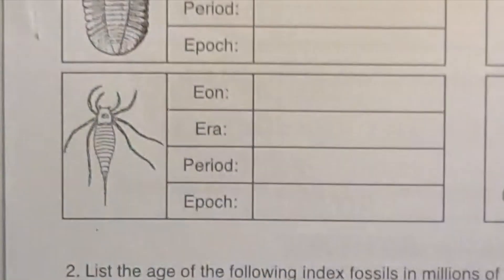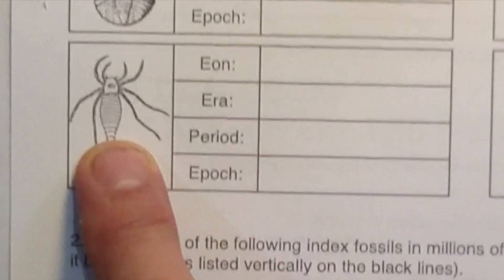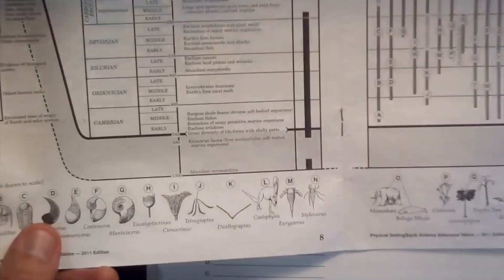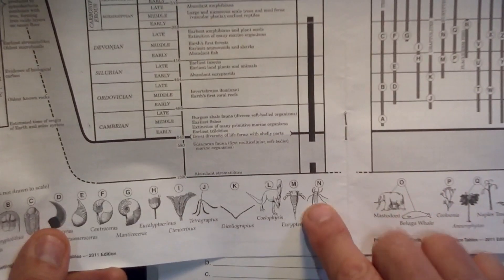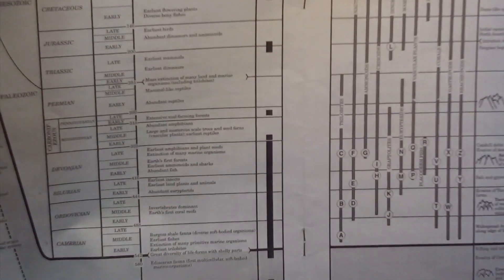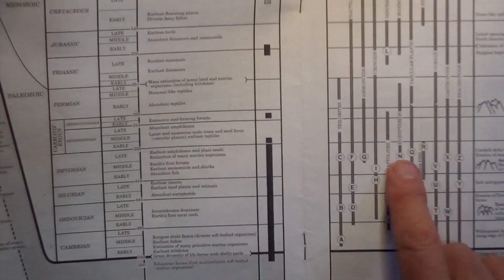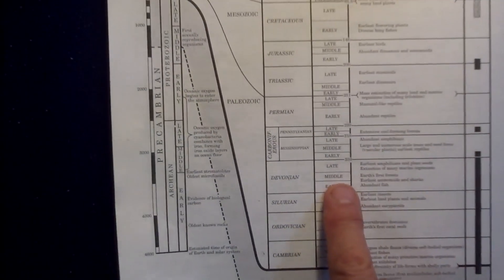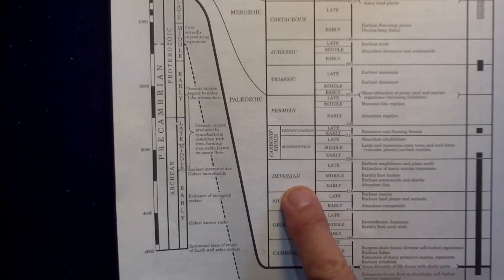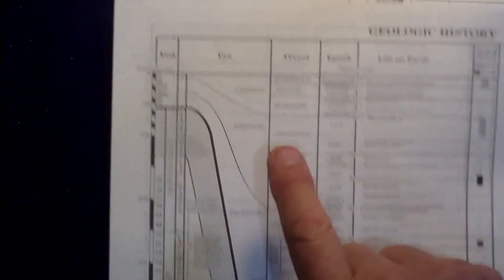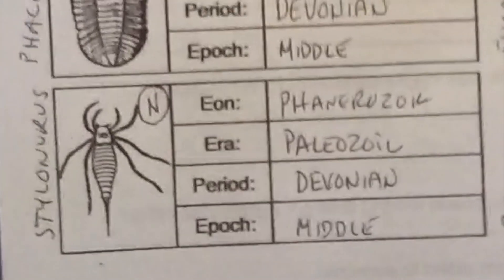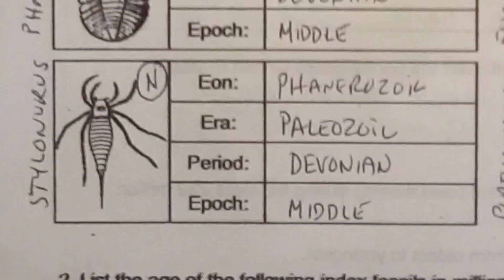The next critter matches up with letter N on the list. Letter N matches up right here, and if I take this to the side, I see this is Middle Devonian again — Paleozoic, Phanerozoic. My answer to the second problem is as follows.